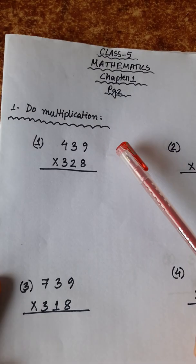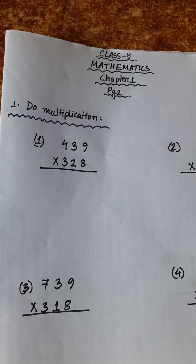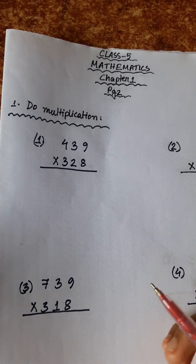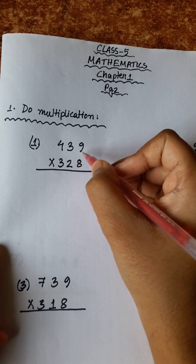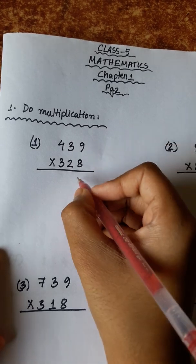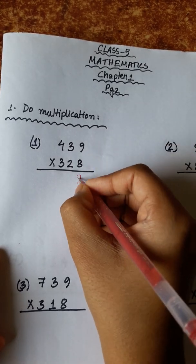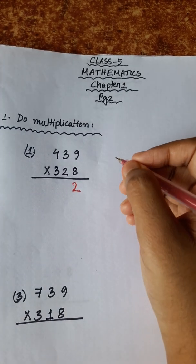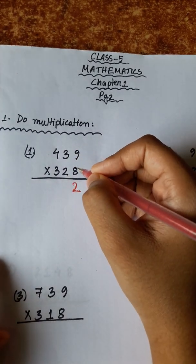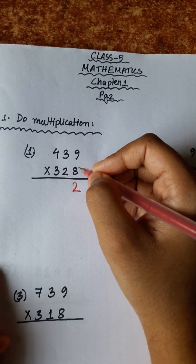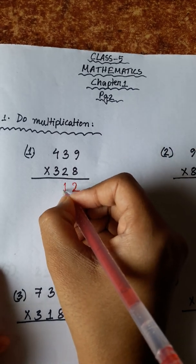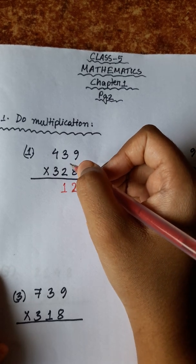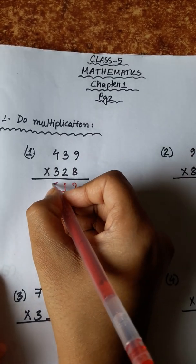Number 1: 439 multiplied by 328. 9 eights are 72, carry 7. 3 eights are 24, plus 7 is 31, carry 3. 4 eights are 32, and 3 is 35.